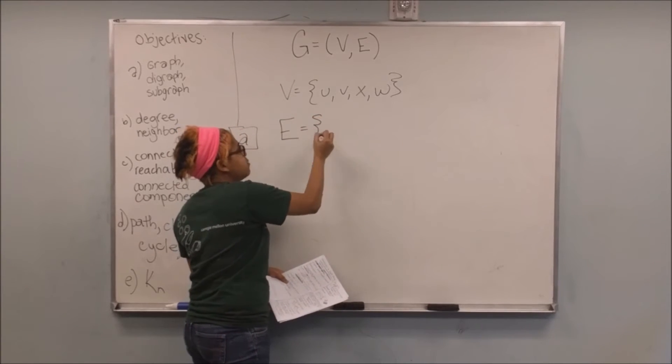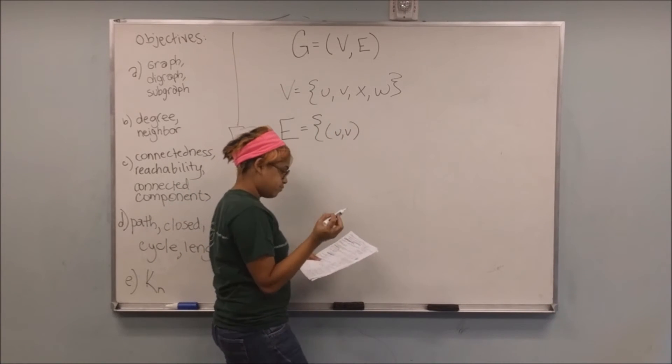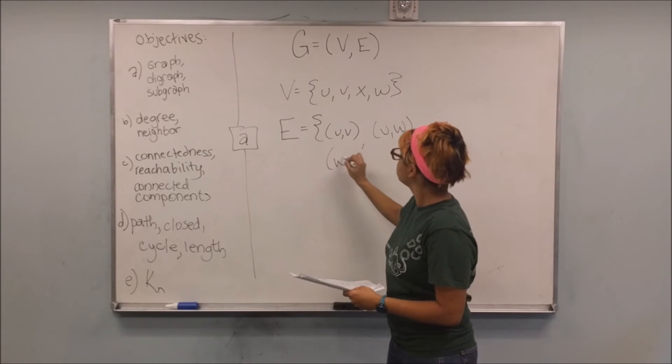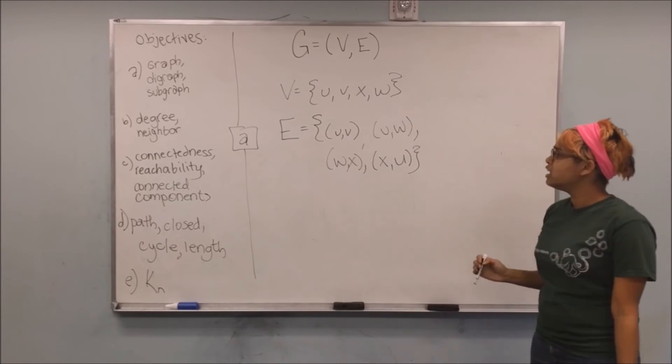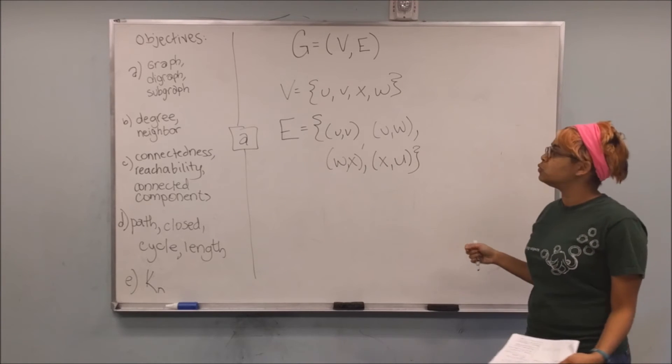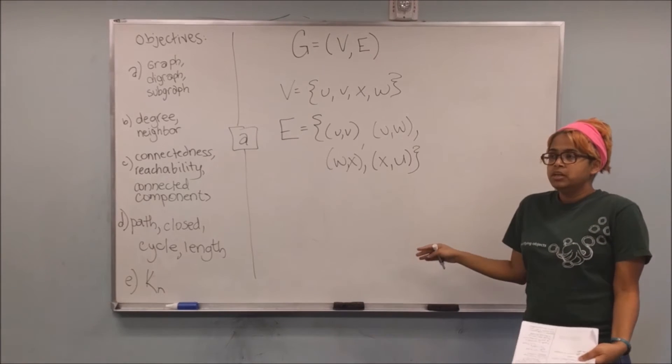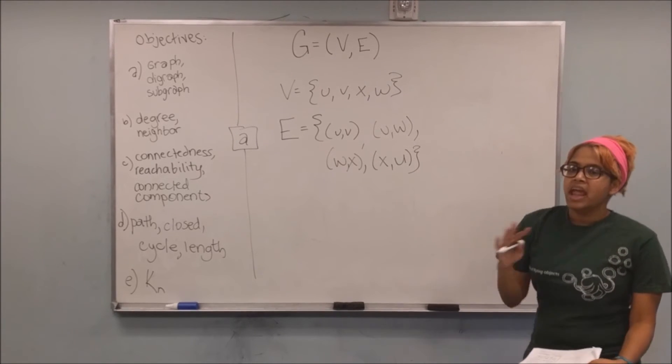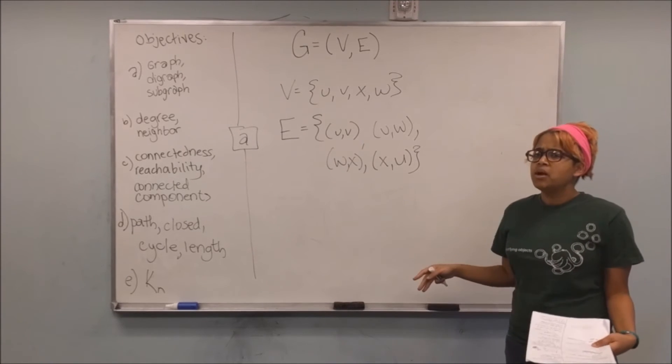So in this case, I might define the edges as being U,V, U,W, W,X, and X,U. Alright, and in this case, I'm just talking about a graph. Remember, graph means like Facebook, in which the order doesn't matter. So even though I wrote U,V, in this case, it does not matter to me whether I wrote U,V or V,W, because it's going to be in both directions.